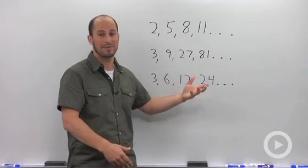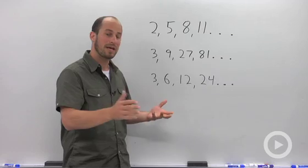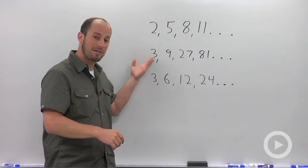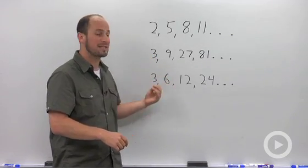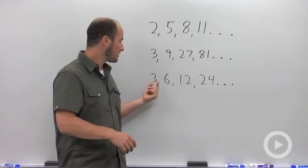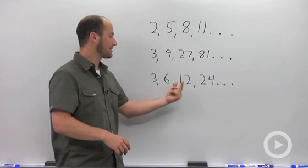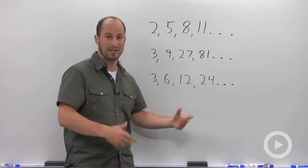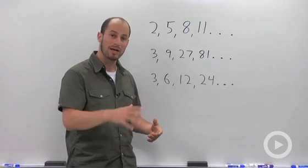The last one is very similar to the one above it, but instead of powers we're just dealing with strictly multiplication. So you take 3, multiply by 2 to get 6, by 2 to get 12, to get 24, and so on.